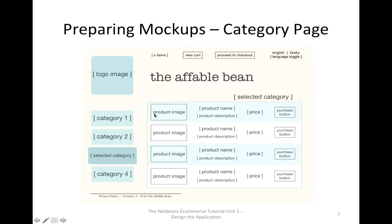Products are listed with product image, name, description, and price, and have a button for the customer to add the product to the shopping cart. If the customer presses the purchase button, one unit of that product will be added to the shopping cart. From this page, the customer can also navigate to any other pages if the link is provided.